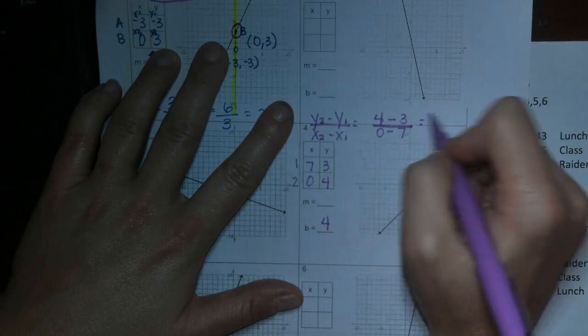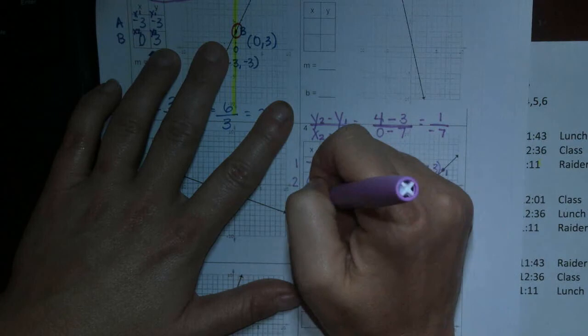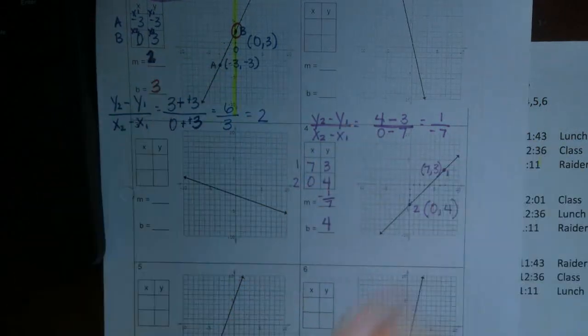4 minus 3, 1, 0 minus 7, negative 7. So your m is a negative 1 7th. So negative 1 7th.